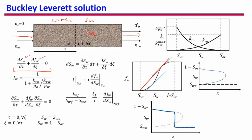If we neglect capillary pressure and consider that this porous medium is perpendicular to gravity, then the fractional flow of water is dependent on relative permeability and viscosity of oil and water. We know from the relative permeability curve that relative permeability is a function of water saturation, so the secondary variable in this whole equation is water saturation. That means using this equation we can find water saturation as a function of space and time — how water saturation is varying in this porous medium with time and at different positions.